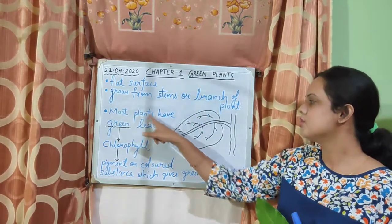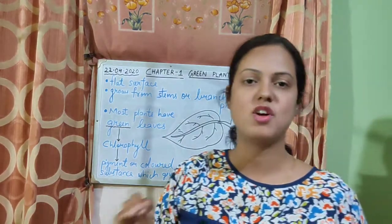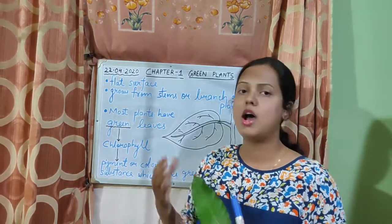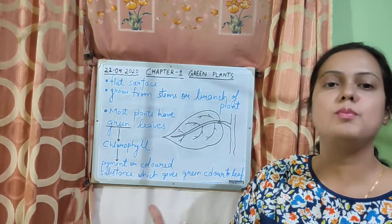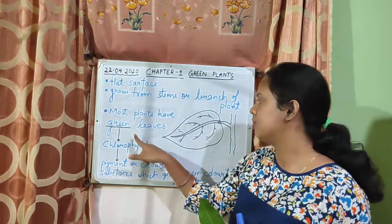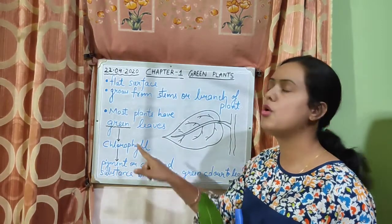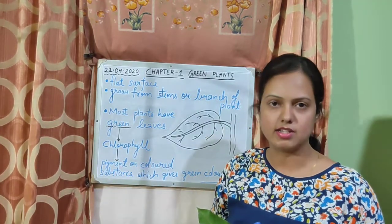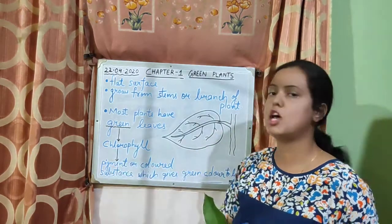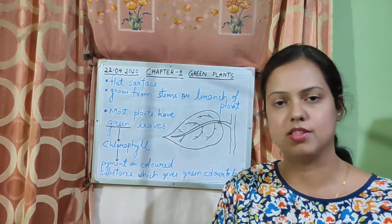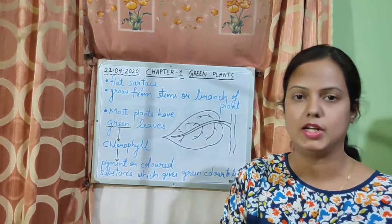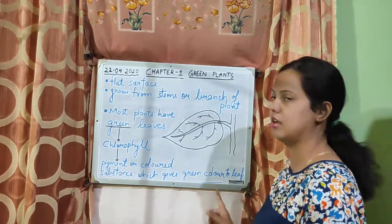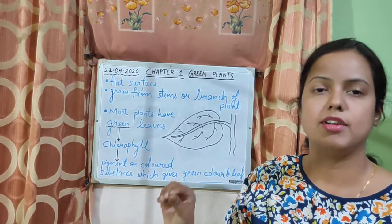Now the third point: most of the plants have green leaves — most of the plants, not all plants. How do leaves get their green color? The leaves are of green color because green leaves have chlorophyll present in them. Chlorophyll is a pigment, or you can call it a colored substance. This chlorophyll gives the leaf its green color.